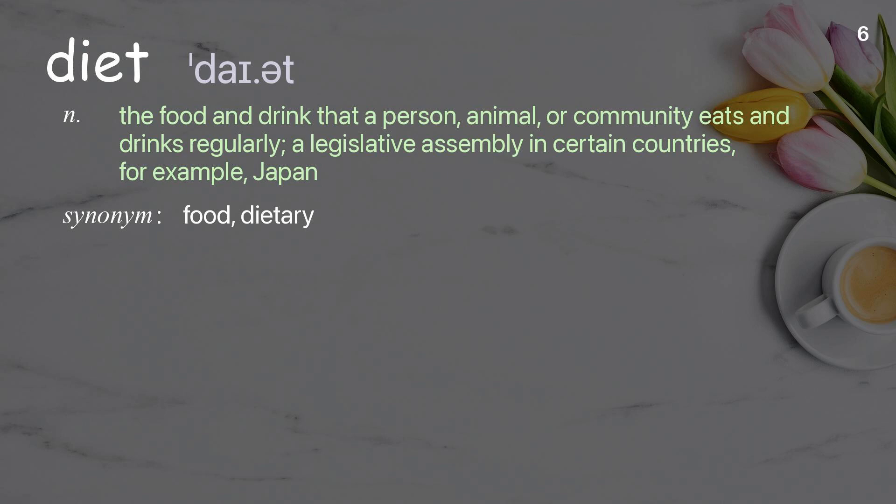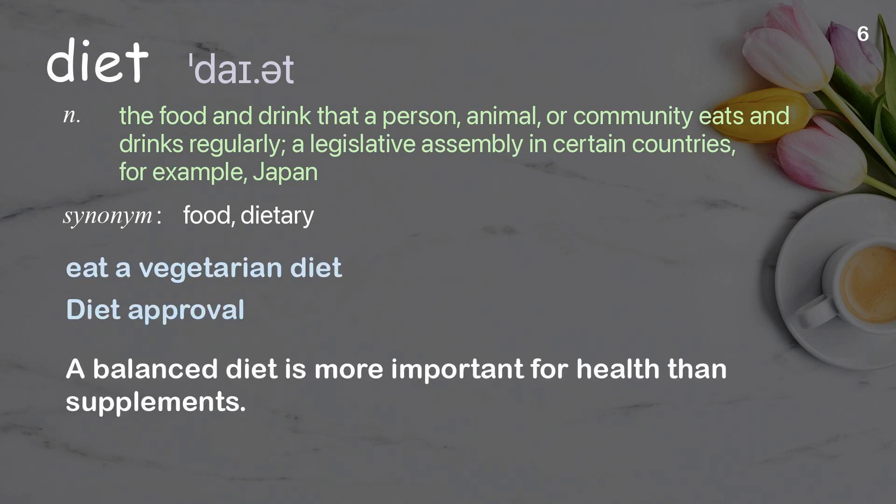Diet. The food and drink that a person, animal, or community eats and drinks regularly; also a legislative assembly in certain countries, for example Japan. Examples: eat a vegetarian diet, diet approval. A balanced diet is more important for health than supplements.